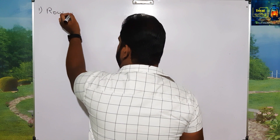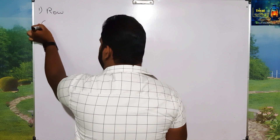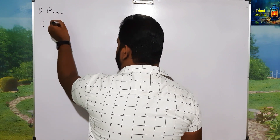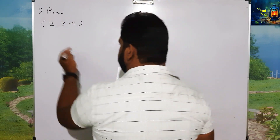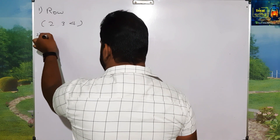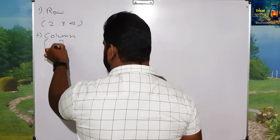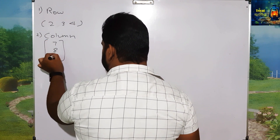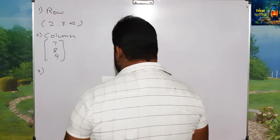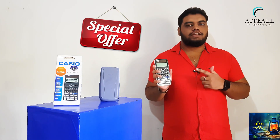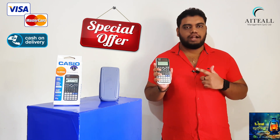This is a row matrix. This is a row matrix as a row.